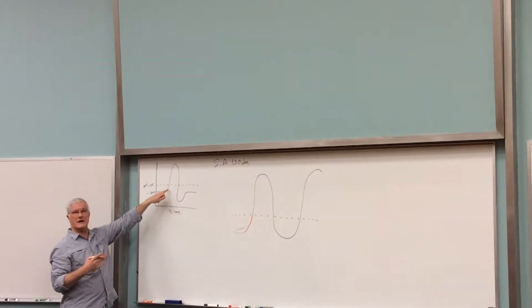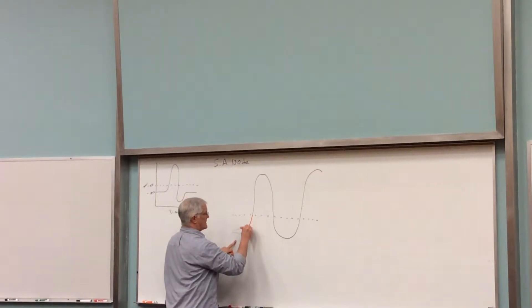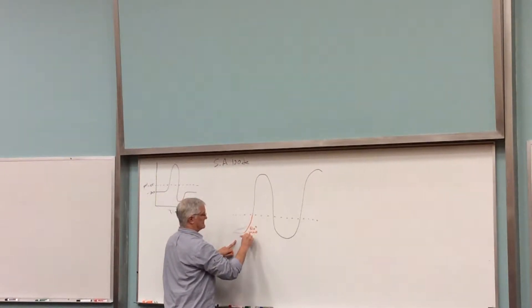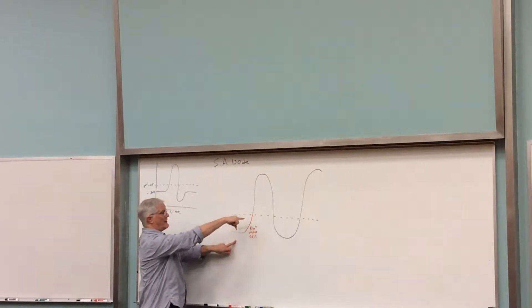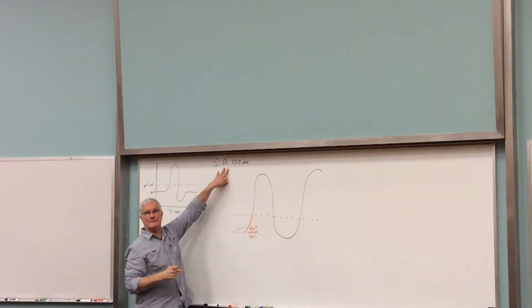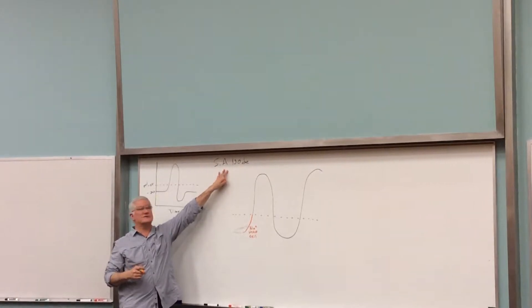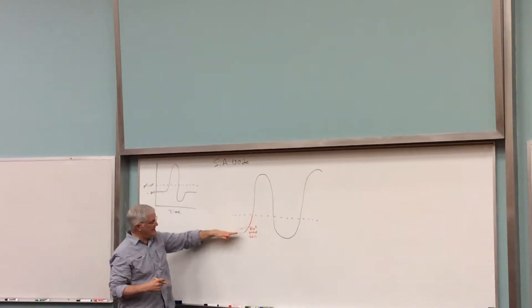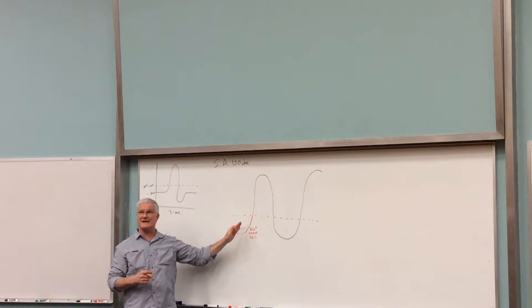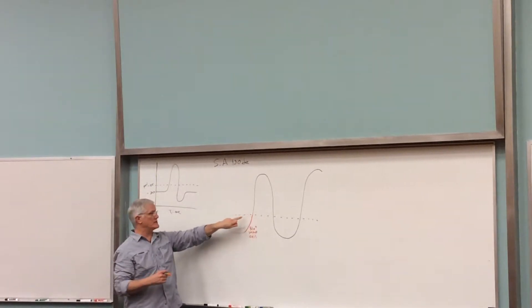Going from resting to threshold, we had sodium ions coming in. Here we have sodium ions coming into the cell as well, making the cell more positive. The cell we're talking about is an SA node.